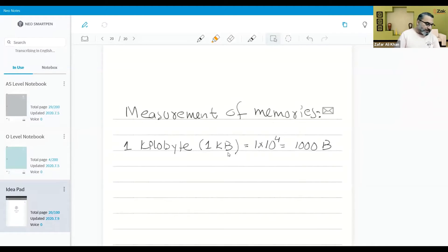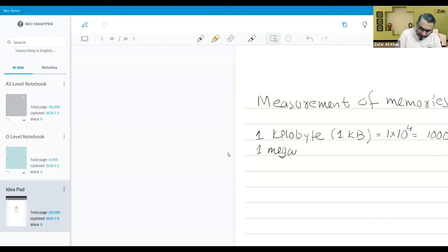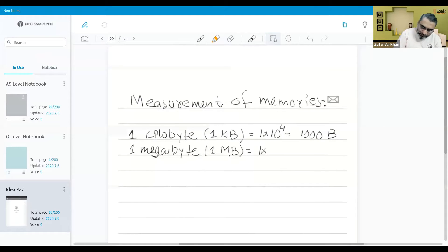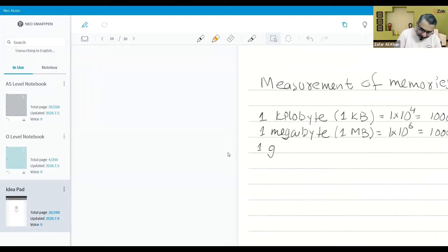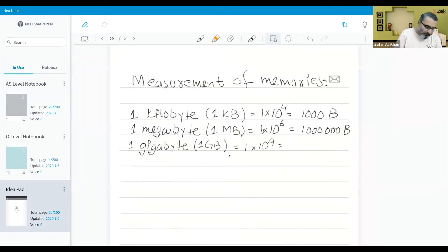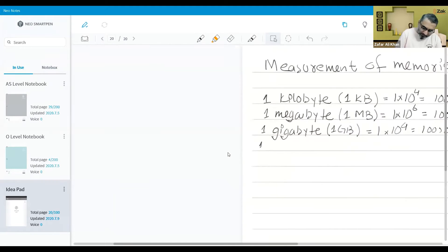Memory size: one kilobyte is 1 × 10⁴, which is 1000 bytes, not 1024 bytes. These are the standards enforced nowadays - SI standards, SI base 10 standards. Second one: one megabyte, 1 MB, that is 1 × 10⁶, which is 1 million bytes. Similarly, 1 gigabyte, 1 GB, that is 1 × 10⁹. Then we have 1 terabyte.